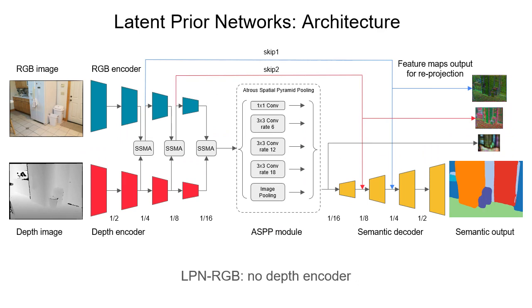For an individual frame, LPN takes in RGBD as input and outputs the semantic labels as well as intermediate feature maps at several strides. Features extracted from RGBD are fused at multiple resolutions with SSMA. The ASPP module is applied at the bottleneck, followed by a lightweight decoder that predicts the final output. Note that we also propose an RGB-only variant where only the RGB encoder is used for feature extraction.